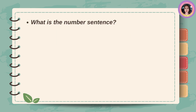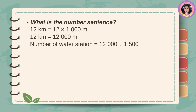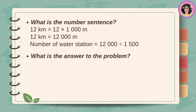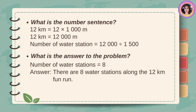Number sentence: 12 kilometers equals 12 times 1,000 meters, so 12 kilometers equals 12,000 meters. Number of water stations equals 12,000 divided by 1,500. Answer: There are 8 water stations along the 12-kilometer fun run.